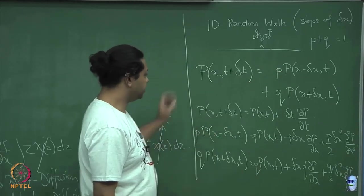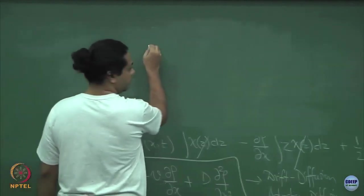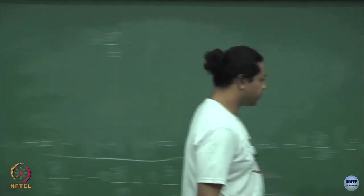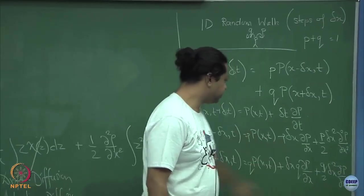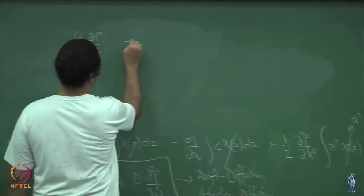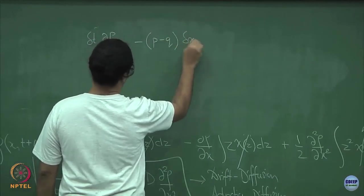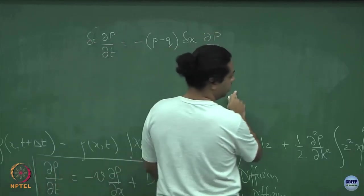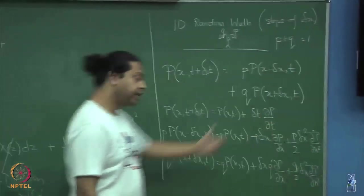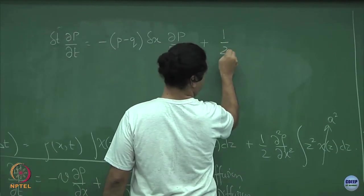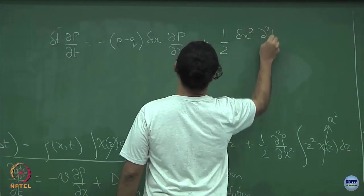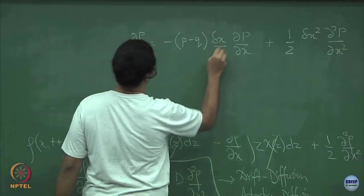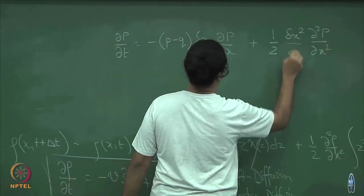Substituting back, the P(x, t) on the left and the (p + q) times P(x, t) on the right cancel because p plus q equals 1. So on the left I have delta t times del P/del t, equal to minus (p minus q) delta x del P/del x plus half delta x squared times (p + q) del² P/del x², which simplifies since p plus q equals 1.